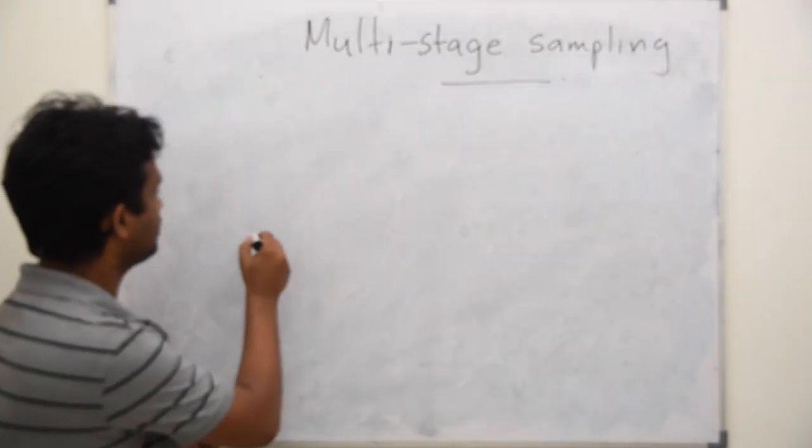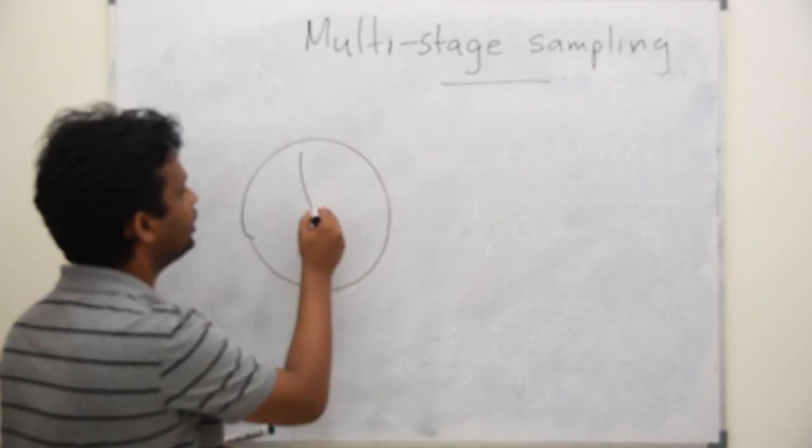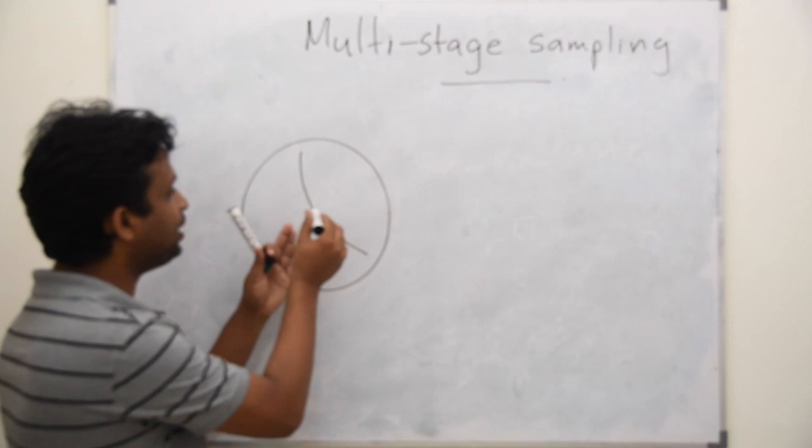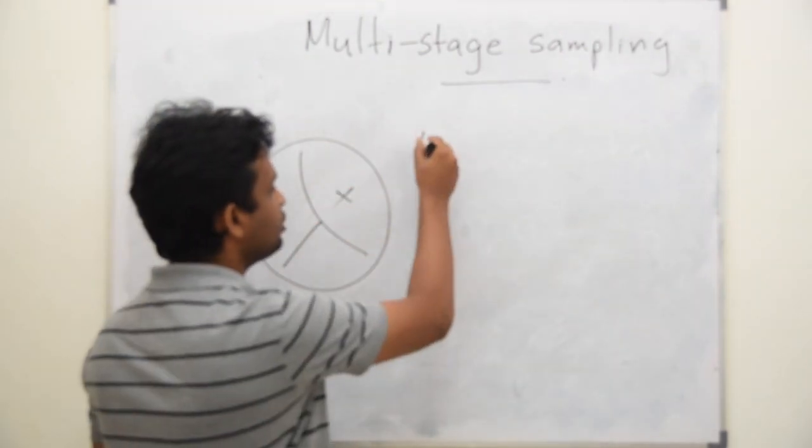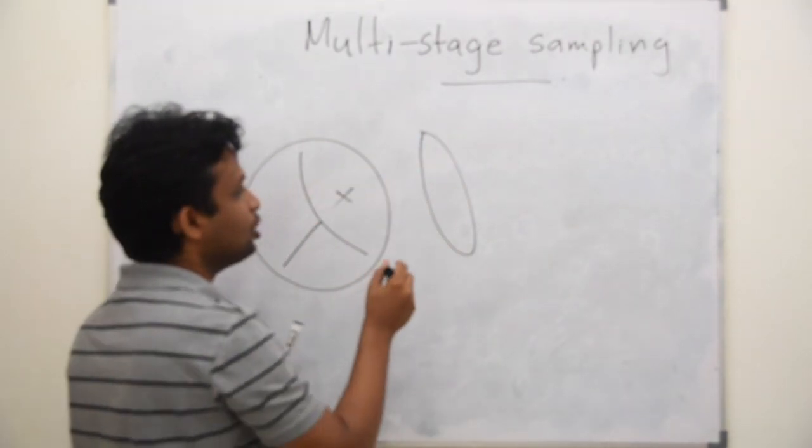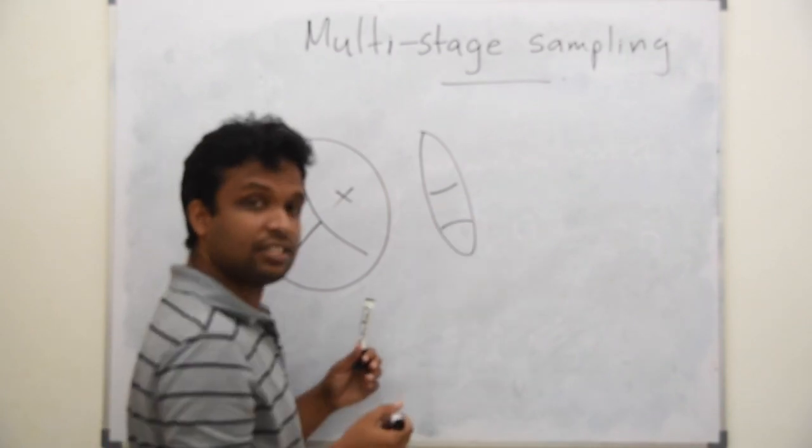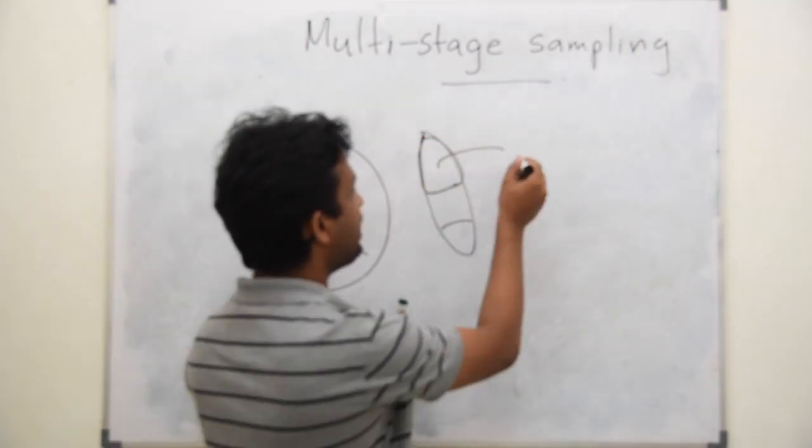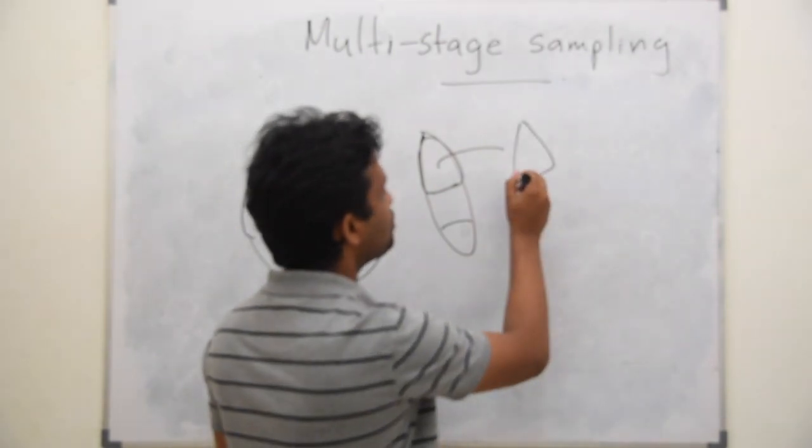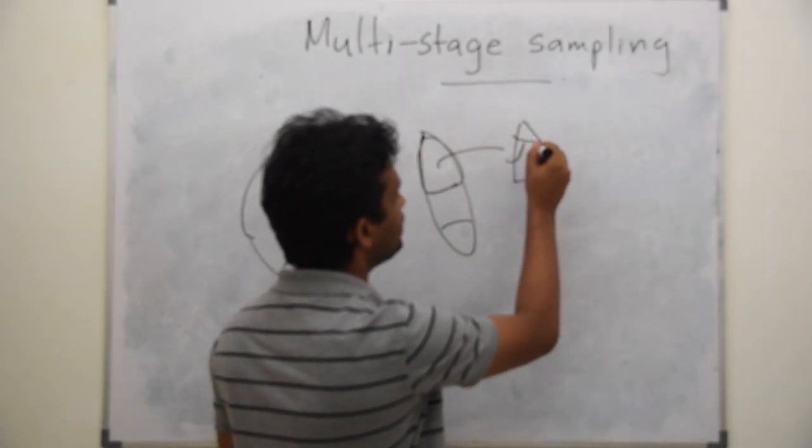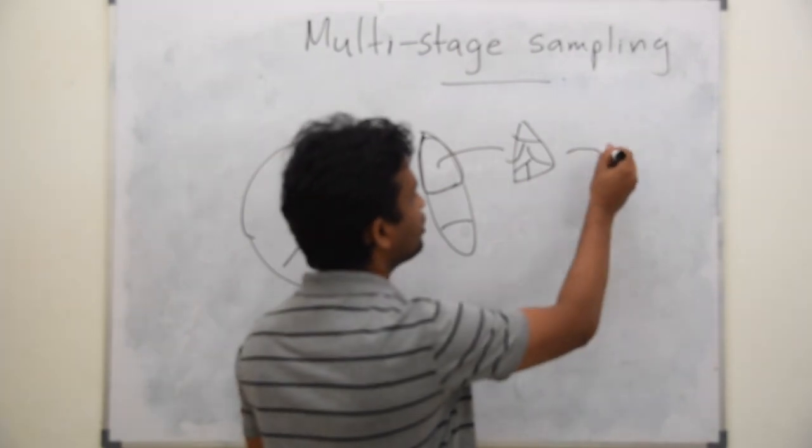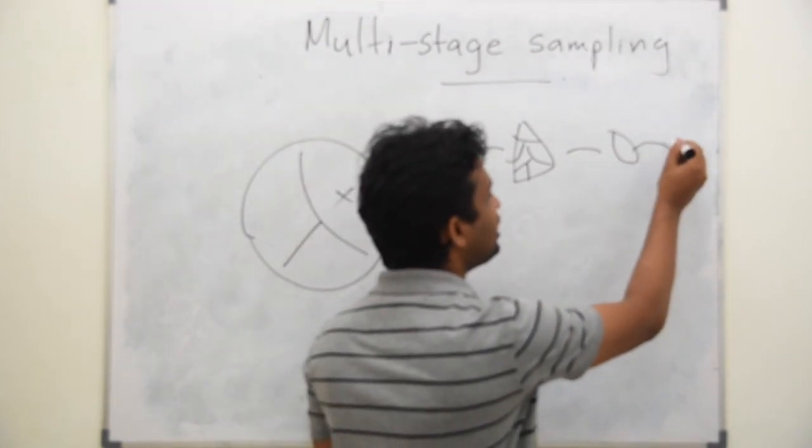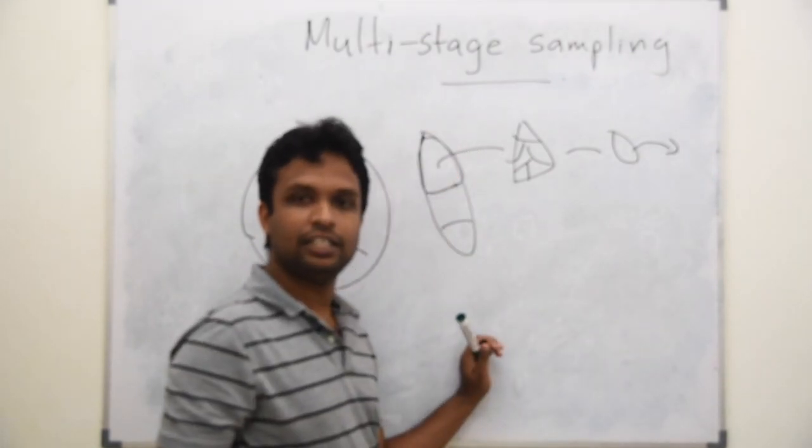In such situations, assume that this is the population, we have three clusters and we pick one randomly. So this is our cluster. Assume that it has several districts. You pick this one randomly and from this one, assume that there are several villages. You take one village randomly and you screen everybody in this village.